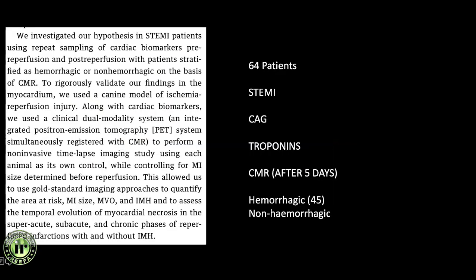In this study, around 64 patients with ST-segment elevated MI were studied. All underwent coronary angiography to identify the culprit vessel — most commonly the LAD, LCX, or RCA. Troponin markers were studied before and during the study. Cardiac MRI was performed after five days, and MIs were classified as hemorrhagic or non-hemorrhagic. They also had a canine model using a dual-modality integrated positron emission tomography system to assess the area at risk.